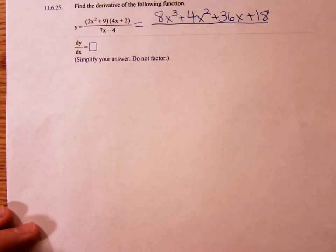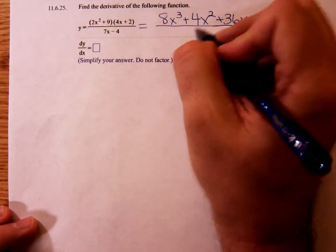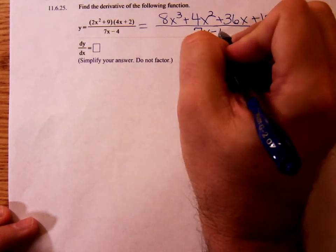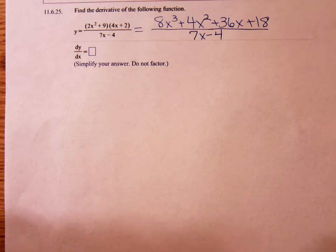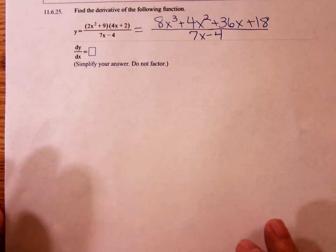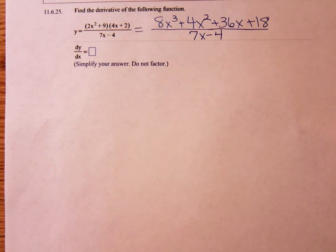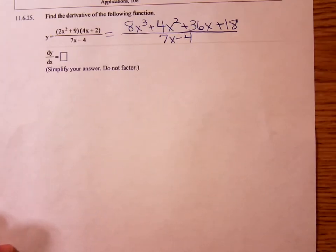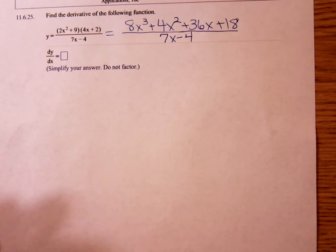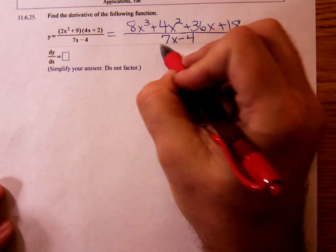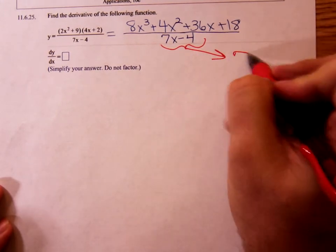And the denominator is still just that 7x minus 4. If we're going to use the quotient rule, we need to know the derivative of the numerator and the derivative of the denominator. So, let's do the derivative of the denominator first. That's easier. What's the derivative of the denominator? Just 7.